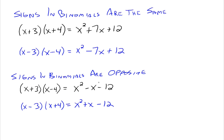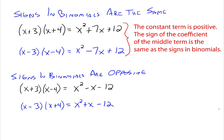Notice the following: for x squared plus 7x plus 12 and x squared minus 7x plus 12, the constant term is positive — it's positive 12 in both cases. Notice that the sign of the coefficient of the middle term is the same as the signs in the binomials. Since this is a plus 7x, the binomials have a plus 3 and a plus 4, and when it was minus 7x, the signs in the binomials are both negative. That happens when the sign of the constant term is positive — the signs inside the binomials are the same as the sign of the middle term.